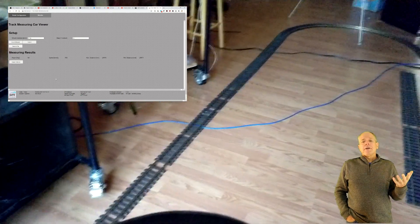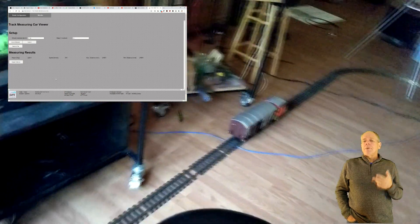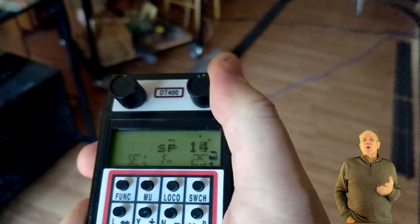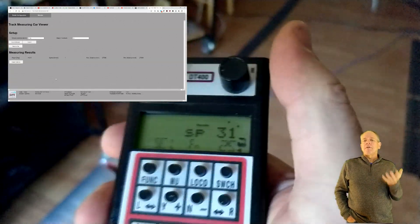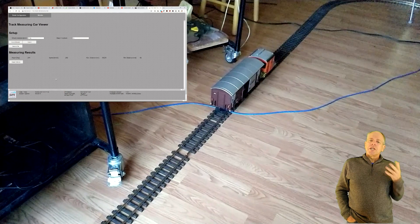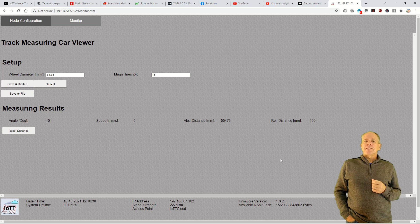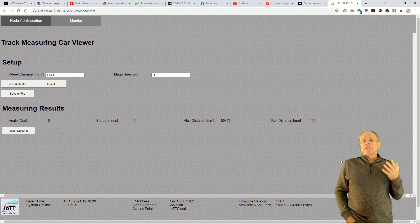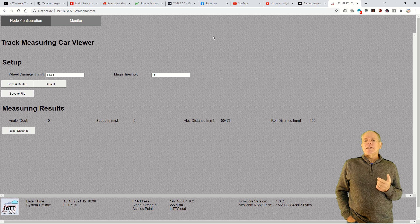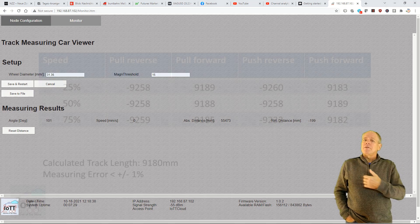So let's run the car around the oval for three times, then change direction and run it three times in the other direction. Going out gives us a total of 27.586 meters. That is close to the theoretical length of 27.54 meters. So the wheel diameter settings appear to be correct. Now changing direction and traveling back. Here are the results. The absolute distance is now 55.473 meters, so about twice the distance as before. And the relative distance is at minus 199 mm, so pretty close to the theoretical zero and negative as expected because the car tends to measure the length of the outside rail when being pushed.